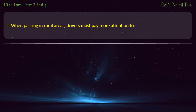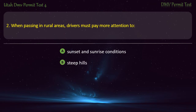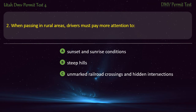Question 2. When passing in rural areas, drivers must pay more attention to: Sunset and sunrise conditions; Steep hills; Unmarked railroad crossings and hidden intersections; or Accelerating lanes? Answer: Unmarked railroad crossings and hidden intersections.